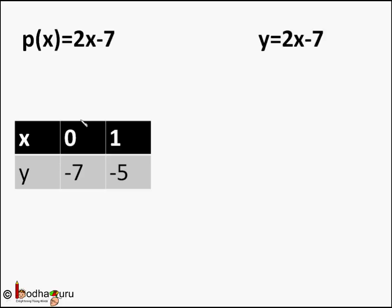And we know from our earlier lessons that the graph of y = ax + b would be a straight line. So we need two points to draw a straight line. Let us take a few different values of x and try to find y.